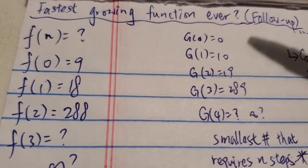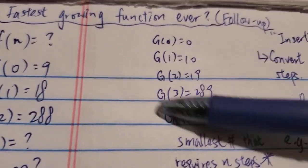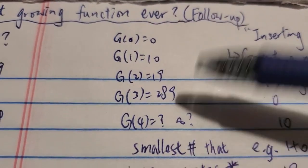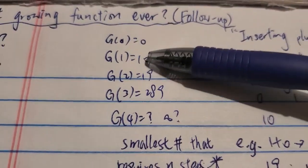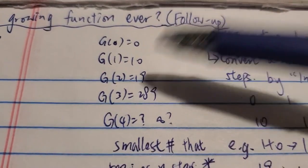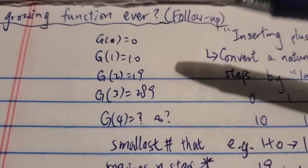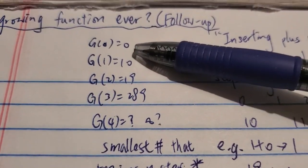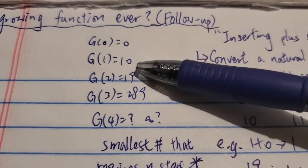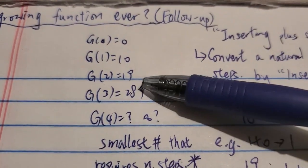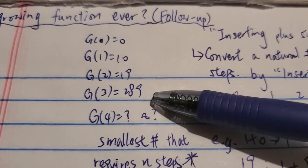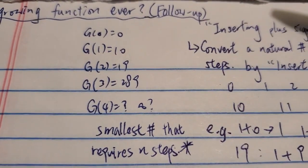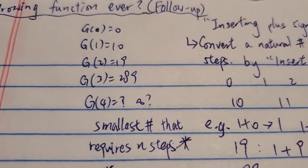In that video, I tried to tell you that this is the fastest growing function ever. So g0 — this is not the Graham sequence, not Graham's number sequence — but anyway, g0 is 0, g1 is 10, g2 is 19, g3 is 289, and g4 is maybe infinity, something like that.